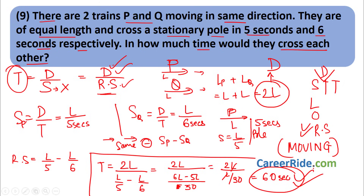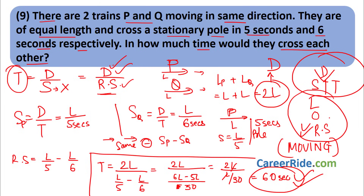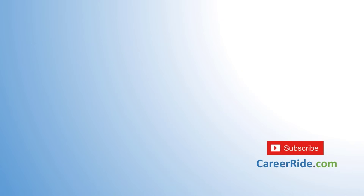Problems on trains are nothing but sums on speed, distance and time. You just need to consider these three things: include the length of the train in distance traveled, take length of pole, stationary man or car as 0, and consider relative speed for moving objects. For stationary objects, no need to consider relative speed. Just remember DST and these three rules to solve any problem on trains. If you liked the video, please like and share it, leave your comments, subscribe to our channel and stay updated for more tutorials.